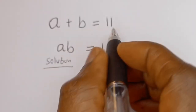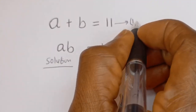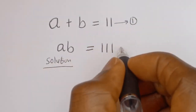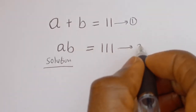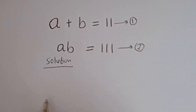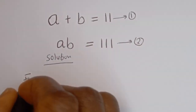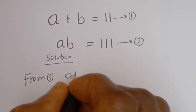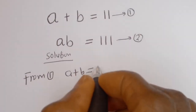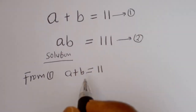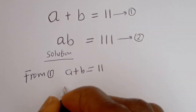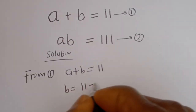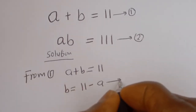A plus B is equal to 11 — let's call this equation 1. AB is equal to 111 — let's call this equation 2. Then from equation 1, A plus B equals 11; let's make B the subject of the formula. B is equal to 11 minus A — let's call this equation 3.